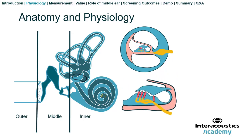Looking closer, we see the organ of Corti, and we'll notice there are three rows of outer hair cells embedded into the tectorial membrane, and there are inner hair cells that are not embedded in the tectorial membrane. When you have vibration of the cochlea along the basilar membrane, the outer hair cells will respond by enhancing the response at that frequency, thereby enhancing the response of the inner hair cells and the neural information transmitted along the auditory nerve and to the brain.